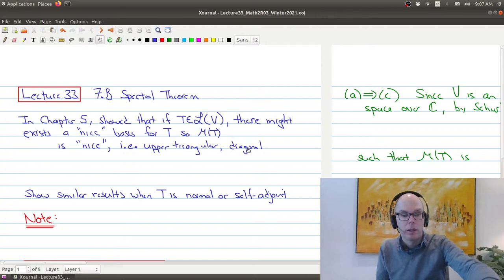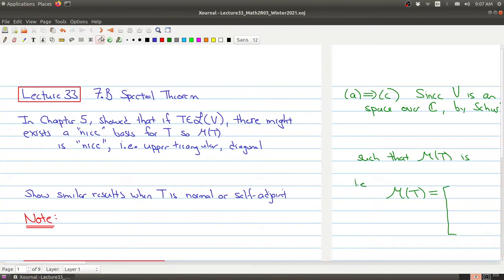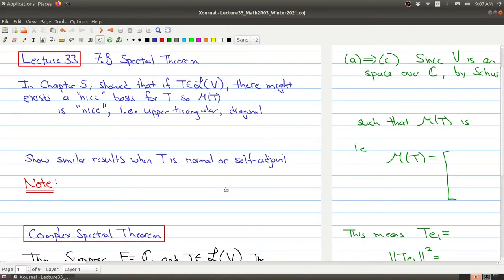The main thing that you want to pay attention to is that there's actually different results depending upon the field. So different results if F is either the complex numbers or the real numbers. We don't see too many of these results in Math2R03 where the coefficient comes in affects your results.